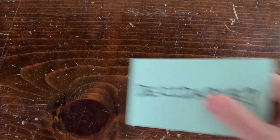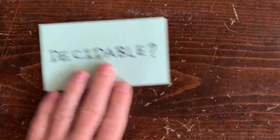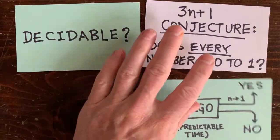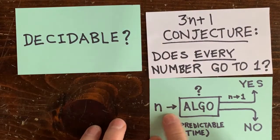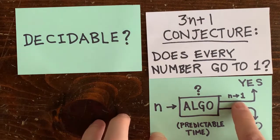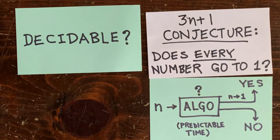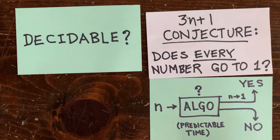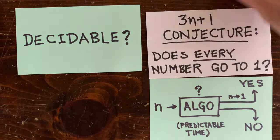Decidability is different. So here's a decision version of the 3N plus 1 problem. Is there a predictable time algorithm that takes a number in as input and outputs yes if n goes to 1 otherwise no? It's not fair to use the 3N plus 1 procedure itself as the algorithm because it definitely doesn't finish in a predictable amount of time.